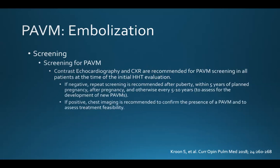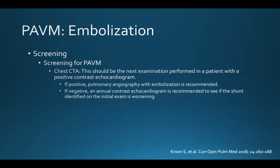When looking for a pulmonary AVM, a contrast echo and chest X-ray are recommended for PAVM screening in all patients at the time of initial HHT evaluation. If negative, repeat screening can be performed after puberty, within five years of a planned pregnancy, after pregnancy, and otherwise every five to ten years. If positive, chest imaging with CT is recommended to confirm the presence of a PAVM and assess feasibility of treatment. A chest CTA usually follows a positive contrast echo, and if positive, a pulmonary angiogram with embolization will be recommended. If negative, an annual echocardiogram is recommended.